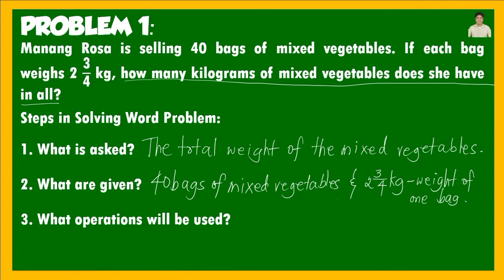Next: What operation will be used? As you can see, we have 40 bags and the weight of each bag is 2 and 3 fourths. Since we are finding the total weight of the mixed vegetables, the operation we will use is multiplication. We need to multiply 40 bags by 2 and 3 fourths to get the total weight.